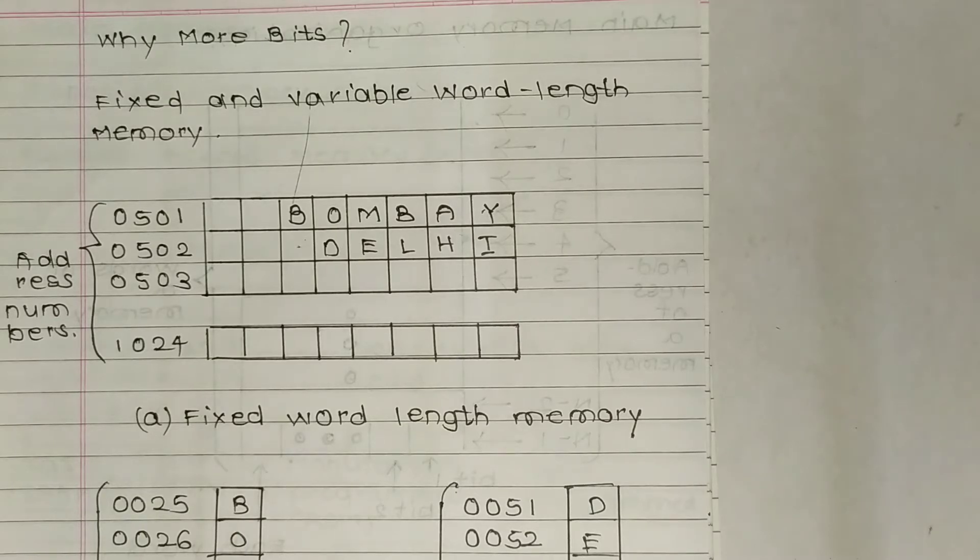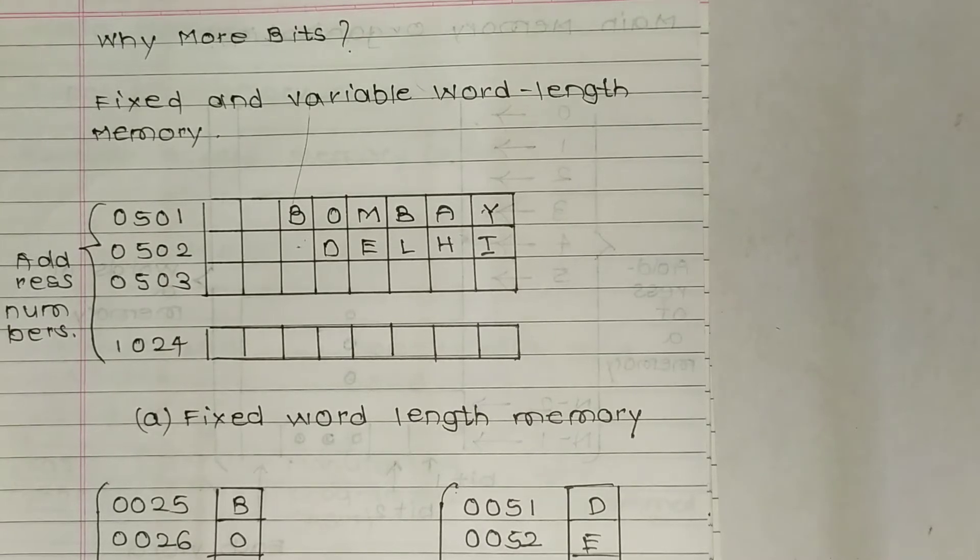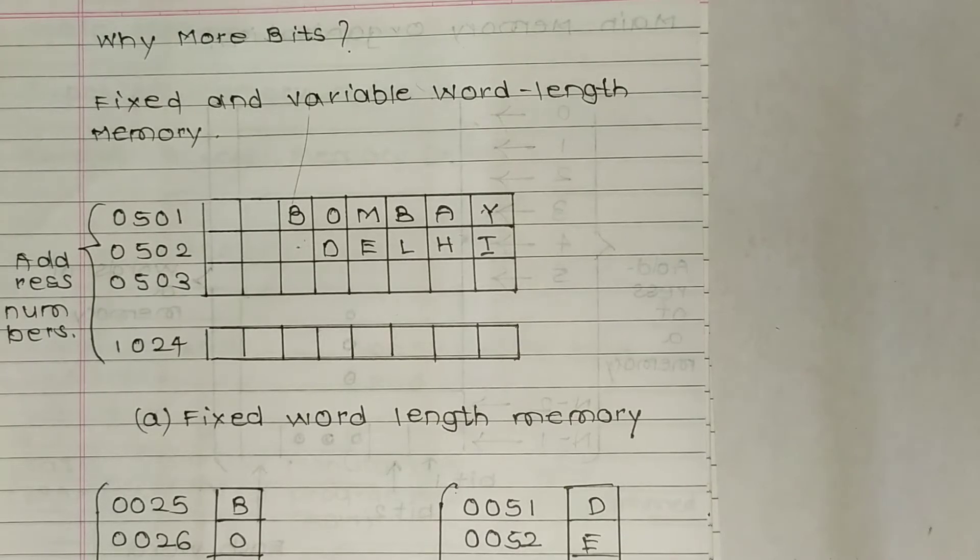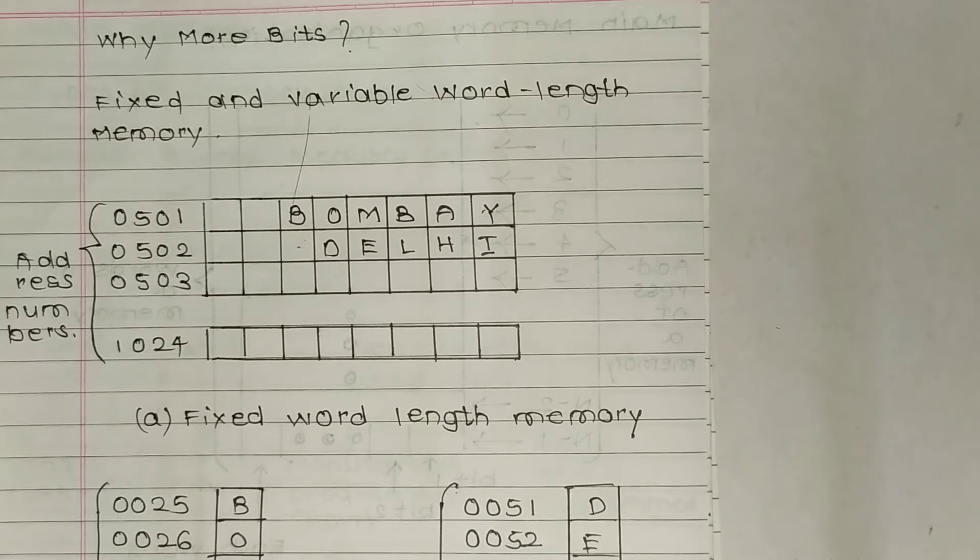These computers always allocate storage space in multiples of word length. Therefore, if a word addressable computer has fixed word length of four bytes, it will require one word (four bytes) to store the word 'cat' and two words (eight bytes) to store the word 'bombay'.